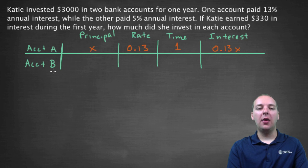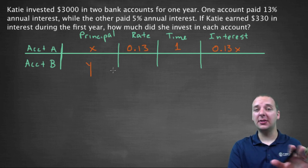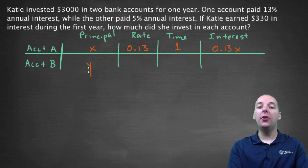Now the amount in account B, I don't know that either, so I'm going to call that Y. Now, if you're used to calling it something else, maybe like three thousand minus X, if you've done this in another math class, hold on to that thought. We'll come back to that in a minute. But for now, I'm just going to call this Y. So I've got another amount in account B that I don't know how much that is either. The interest rate there is 0.05, again for one year, and the interest would be 0.05 of Y.